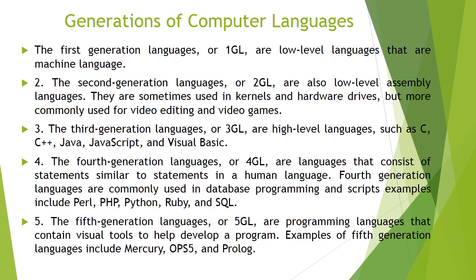There are different generations of computer languages — five generations in total. In the first generation, when the computer came into the world, that was the first generation language called 1GL, also known as low level language. The second generation language, or 2GL, also a low level language, is known as assembly language. It is sometimes used in kernels and hardware drivers, but more commonly used for video editing and video games. The third generation language, or 3GL, includes high level languages such as C, C++, Java, JavaScript and Visual Basic.